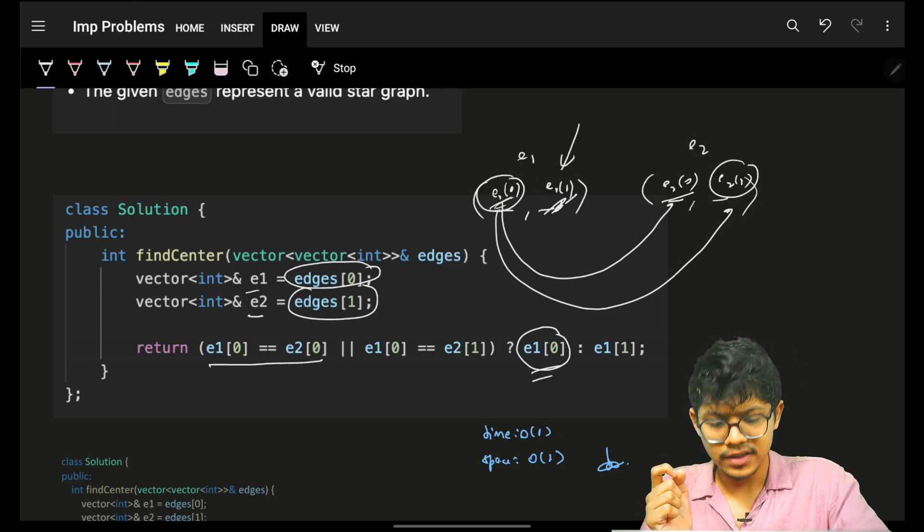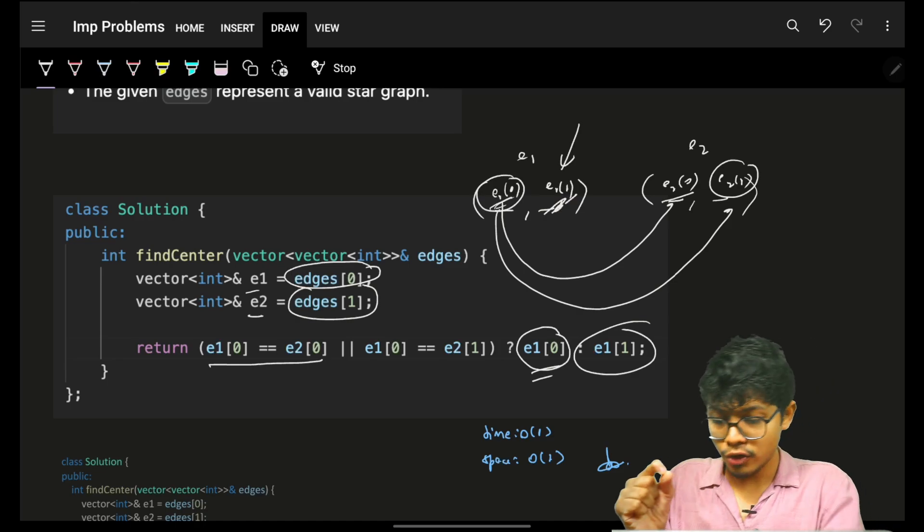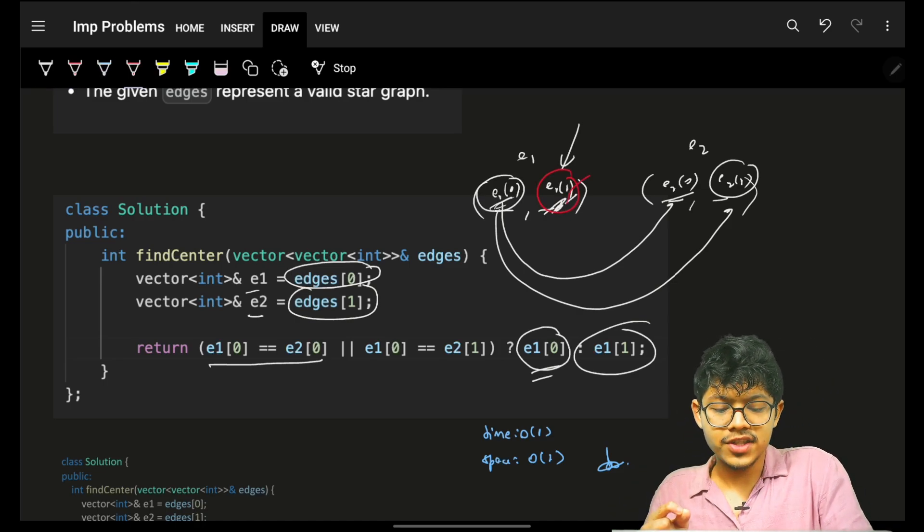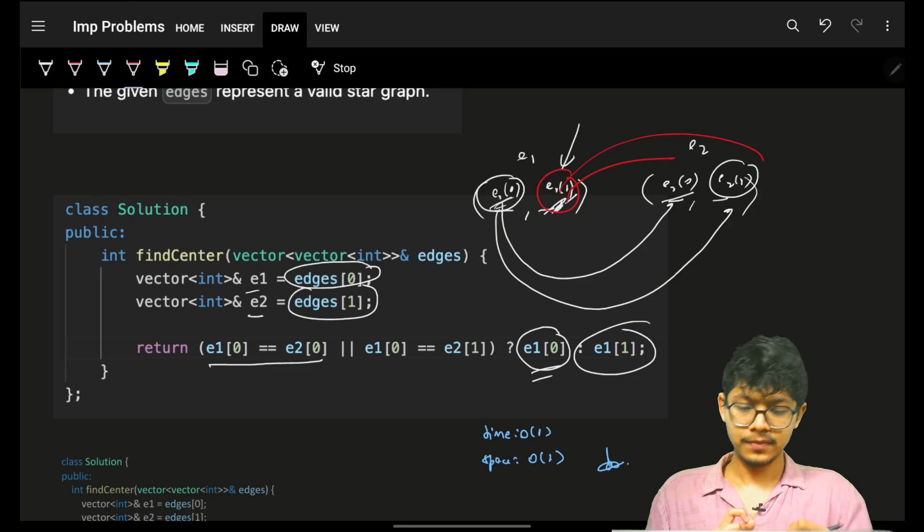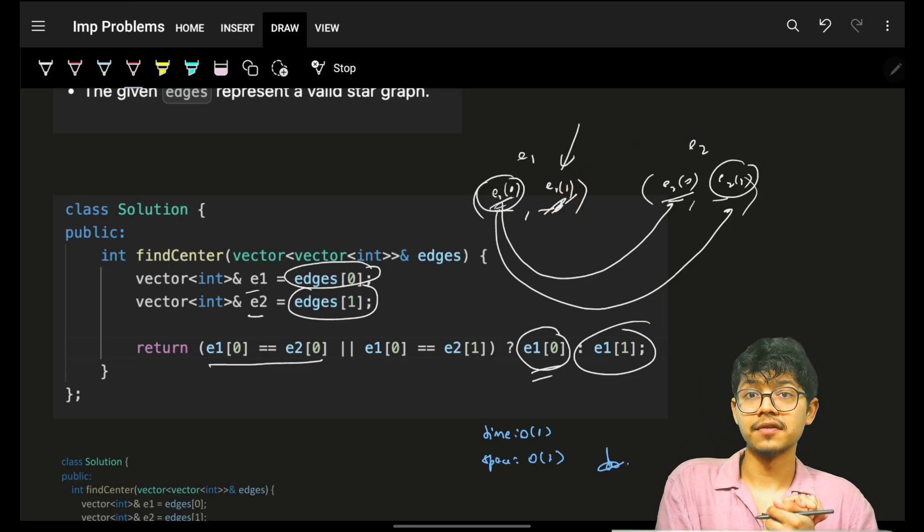Because I know for sure, for sure, there will exist some element which is common because I know this will for sure form a star graph. So yeah, that's the answer.